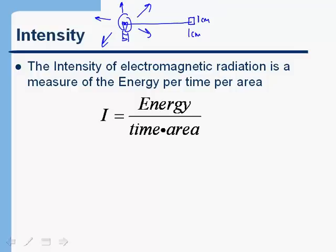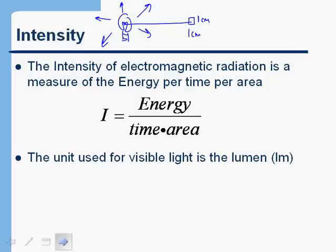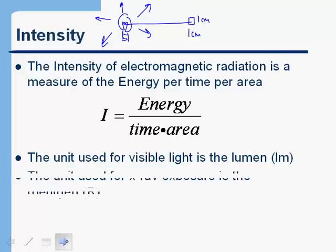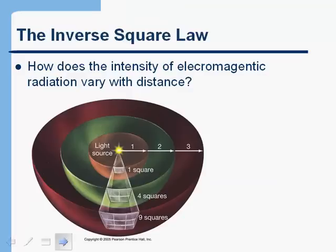If we're dealing with visible light, the unit of intensity we use is the lumen. So if you're close to a light bulb the intensity is a higher number of lumens than if you're farther away. For x-rays, the unit we use for x-ray exposure is the roentgen. So if you're close to an x-ray tube the intensity in roentgens is going to be higher than if you're farther away.